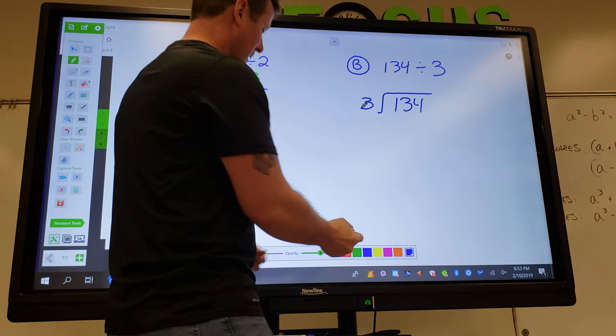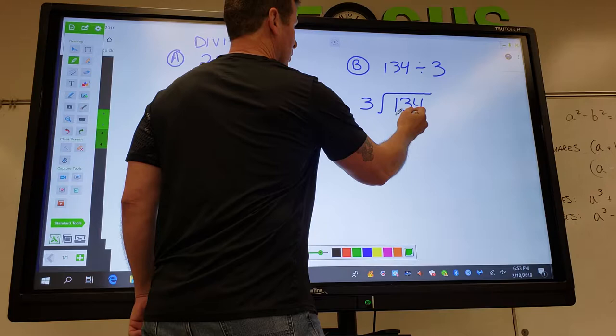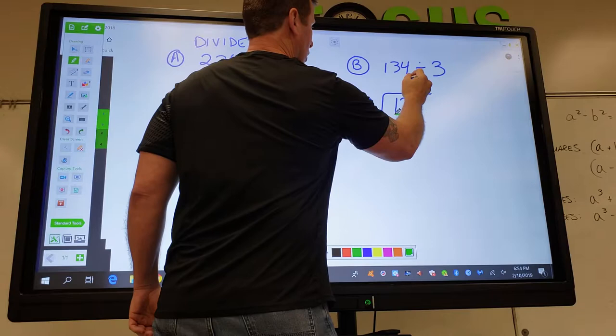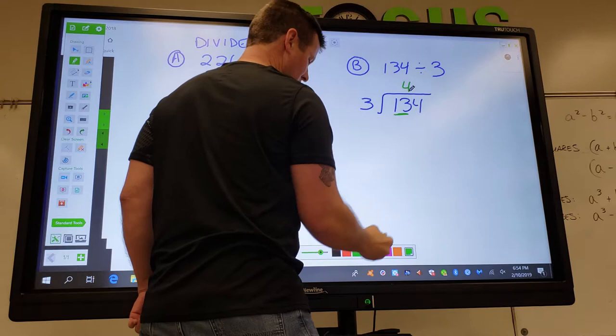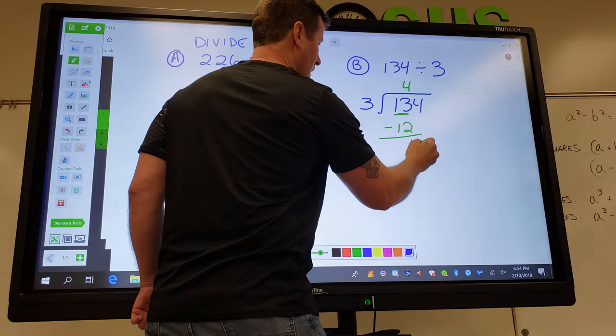Secondly, now what do I do? I need to ask myself, does 3 go into 1? No. So then does 3 go into 13? 4 times. So what do I do with that 4? I put it up top and then my goal is to multiply 4 times 3 and write 12 and then subtract.